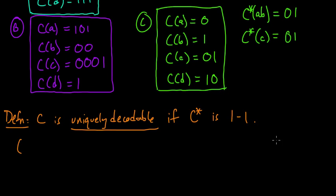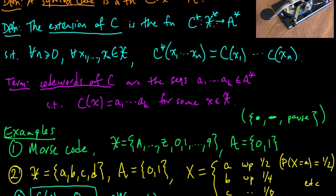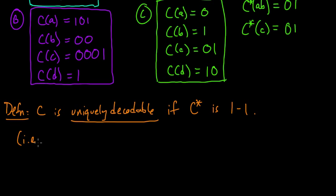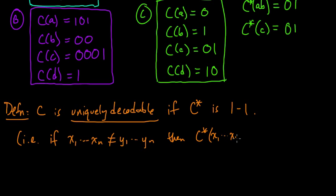We say that C is uniquely decodable if its extension C* is one-to-one. C* is a function from X* to A* — a function from sequences of source symbols to sequences of code symbols, determined by stringing together the code words. When we say C* is one-to-one, we mean that for any two sequences: if (x1, ..., xn) is not equal to (y1, ..., ym), then C*(x1,...,xn) is not equal to C*(y1,...,ym). That is the definition of a uniquely decodable code.